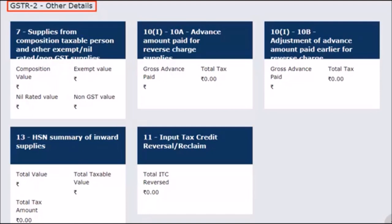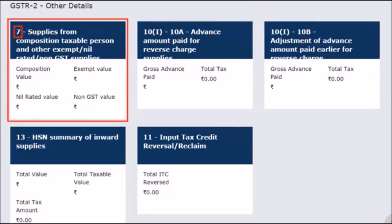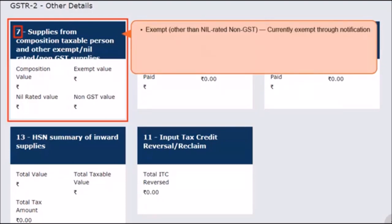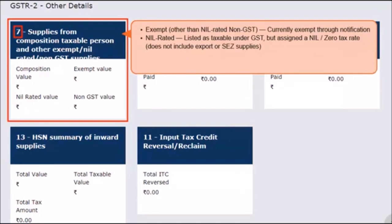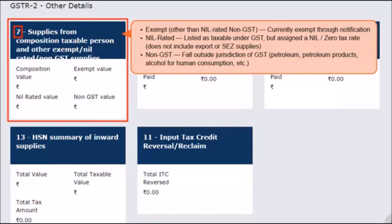Next is the GSTR 2 Other Details block. In this block, the summary details for the tax period are to be reported. The first tile includes a summary of intra-state inward supplies from composition dealers and both intra-state and inter-state inward supplies of goods and services that are either exempt, nil-rated, or non-GST. Exempt, other than nil-rated, non-GST goods or services are those which are currently exempt through notification. Nil-rated means goods or services that are listed as taxable under the GST regime but assigned a nil or zero rate of tax. This does not include zero-rated supplies, such as export or SEZ supplies, as notified under the IGST law. Non-GST supplies are goods and services that fall outside the jurisdiction of GST, such as petroleum and petroleum products, alcohol for human consumption, etc.